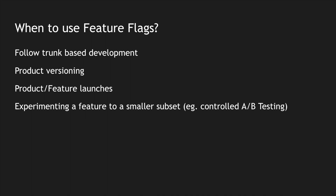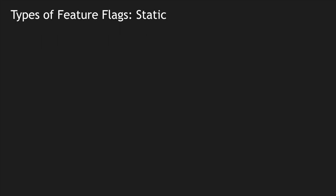When experimenting with a feature, we sometimes want to give access to a specific subset of people — that's A/B testing. We can do controlled A/B testing using feature flags; for example, if Facebook is launching a new UI and wants to test it with a small subset of people to understand their behavior and feedback, they can use feature flags with a controlled toggle. Finally, we can also use feature flags to control system behavior using operational tools.